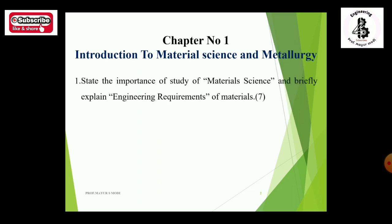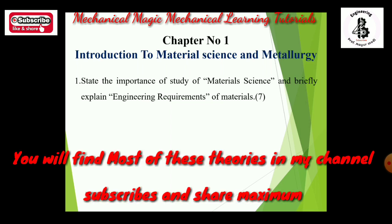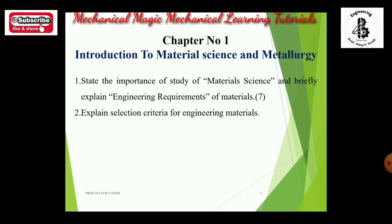Theory number 1: state the importance of material science and briefly explain the engineering requirements of materials. This is a two-part combination theory worth a total of 7 marks. Sometimes it will be only 'state the importance of the study of material science' for 3 to 4 marks, and 'explain the engineering requirements of materials' for 3 to 4 marks separately. The next important question is: explain the selection criteria for engineering materials, for 4 marks or 7 marks.